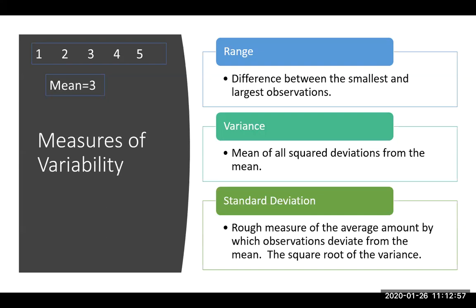After that, we're going to learn what the standard deviation is. And the standard deviation is going to be the end-all be-all for us. For statistics, we're really going to just take that standard deviation and run with it. And so the definition of the standard deviation is kind of what we've been going for the whole time, which is a rough measure of the average amount by which the observations deviate from the mean. By the way, the standard deviation is just simply the square root of the variance. So it's a nice mathematical transition.